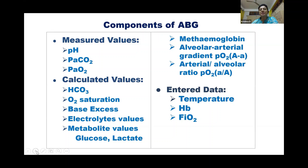Then there are some values of abnormal hemoglobin like methemoglobin, and alveolar-arterial gradient and arterial-alveolar ratio. These two ratios help us to know the proper diffusion of oxygen between alveoli and pulmonary capillaries. You can also enter data like temperature, hemoglobin of the baby, and FiO2 being received by the baby.